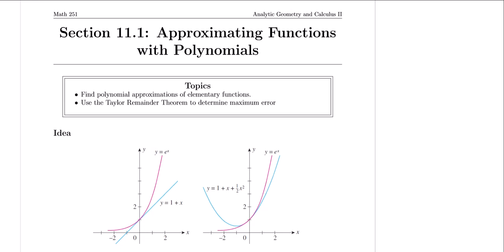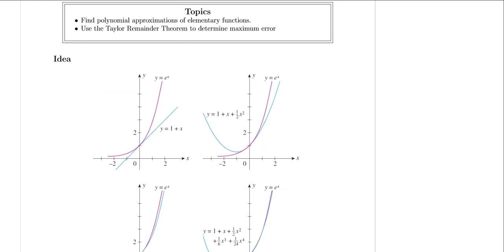To begin, let's consider the elementary function e to the x, and let's say we wanted to approximate the function values near a point, in this case a equals zero. Near a equals zero, the function e to the x looks pretty much just like a line. To get this line, we needed the equation for a line tangent to a particular point: f of x minus f of a equals f prime of a times x minus a, which is tangent to a.